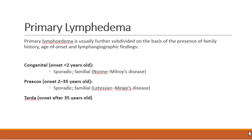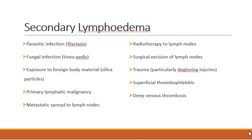The three subtypes are congenital, precox, and tarda. Congenital type has onset less than two years of age; sporadic and familial cases are present, with familial cases also known as Milroy disease. Precox has onset between two to thirty-five years of age, with sporadic and familial cases — familial is known as Meige disease. Tarda has onset after thirty-five years of age.